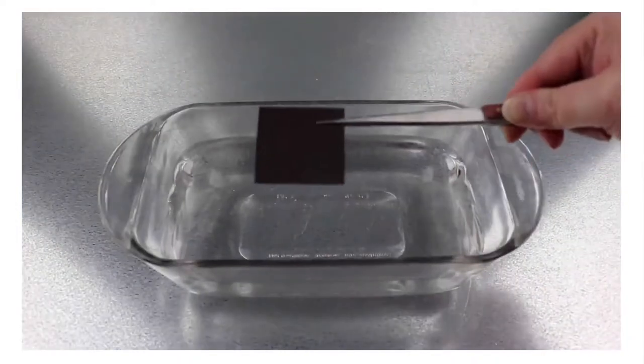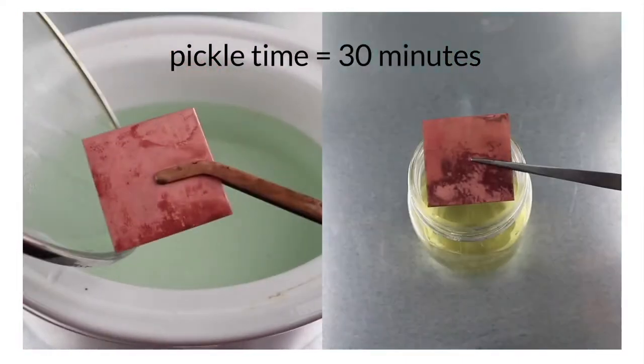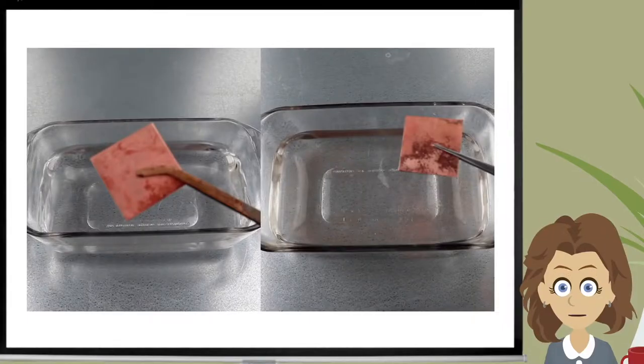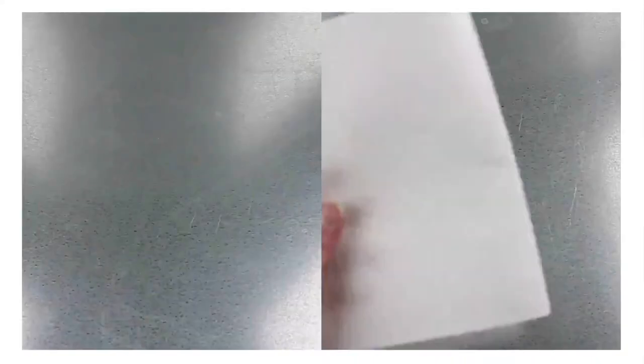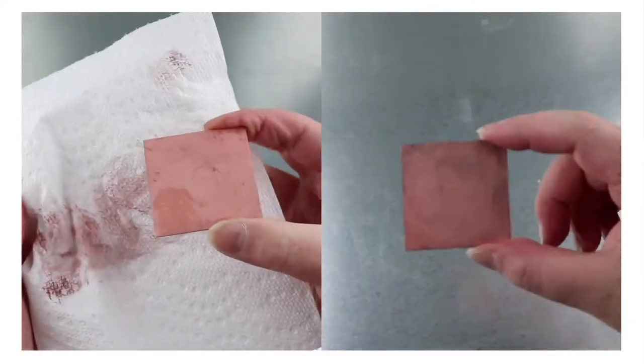Quench in water and into the pickle it goes. Pickle until clean. And rinse. What are those dark copper blotches? Just a bit of leftover copper oxides. But I like to call them copper poopies. You'll need to wipe the copper poopies off. The copper is now prepared for the patina.